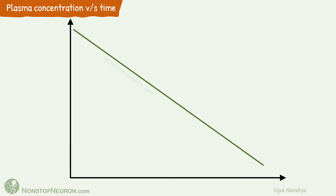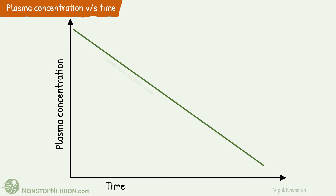Now, let's see the graph of plasma concentration of drug against time. In zero-order kinetics, it's linear. This is because a fixed amount of drug is being eliminated in unit time, so the graph we get is a straight line.